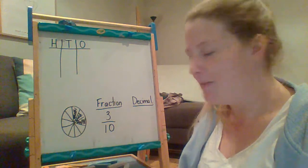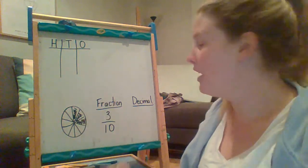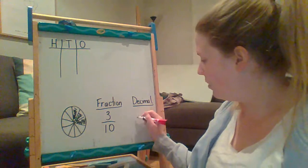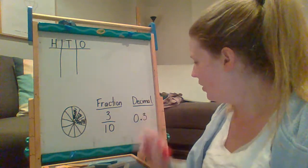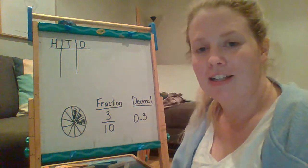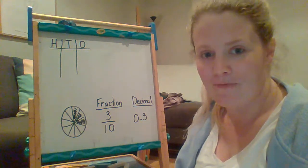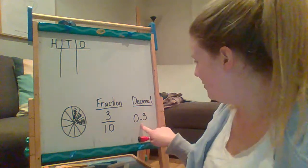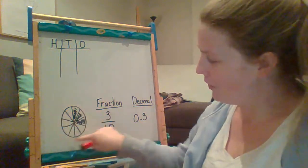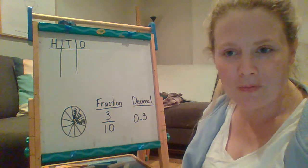Because I have ten pieces and if I was to show that as a decimal, we know that that would be a zero, a decimal point and a three. So we've got three tenths as a fraction, three tenths as a decimal. I'm also showing three tenths in a picture form as well.